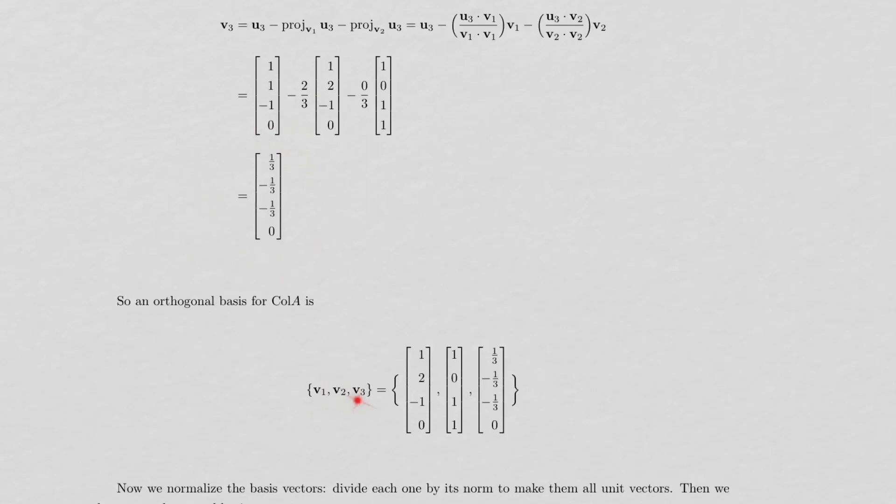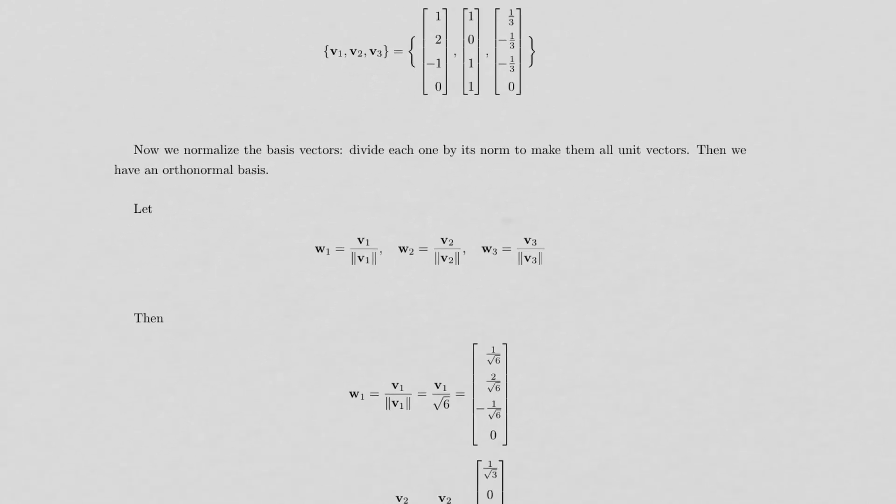So if I put v1, v2, and v3 in a set, there is my orthogonal basis. So it's orthogonal. It's not orthonormal yet. These are not unit vectors. If you take the norm of any of these, you're not going to get 1. But that's easy enough to fix.